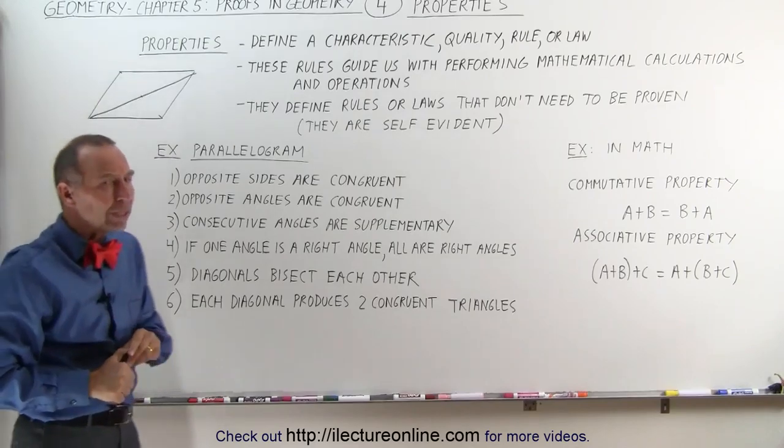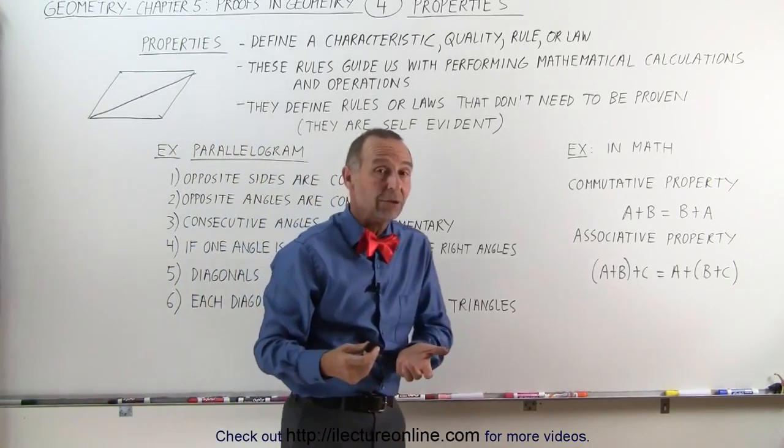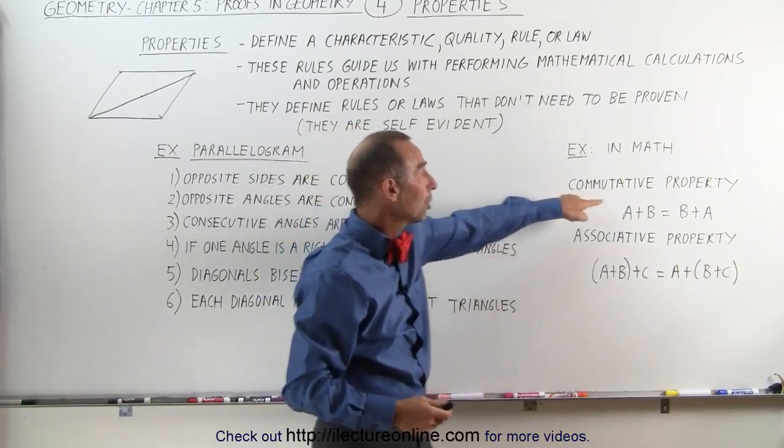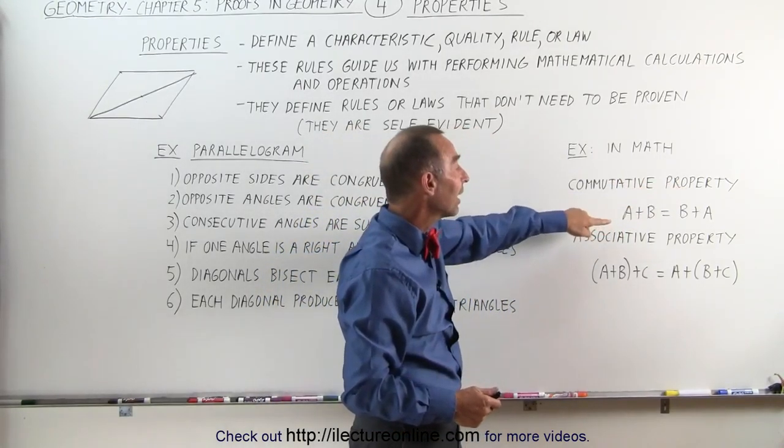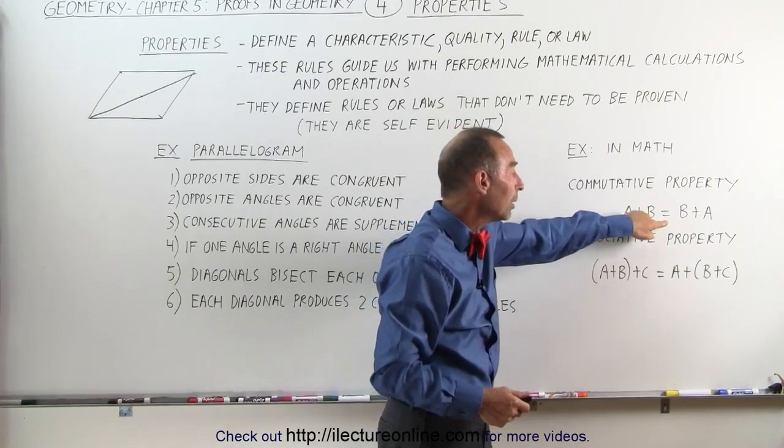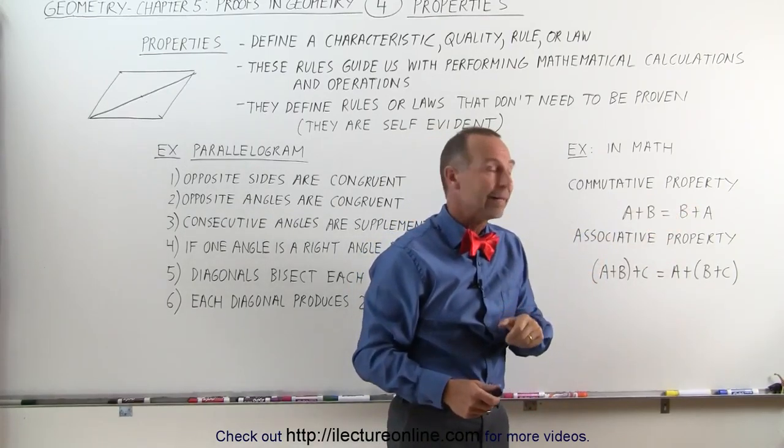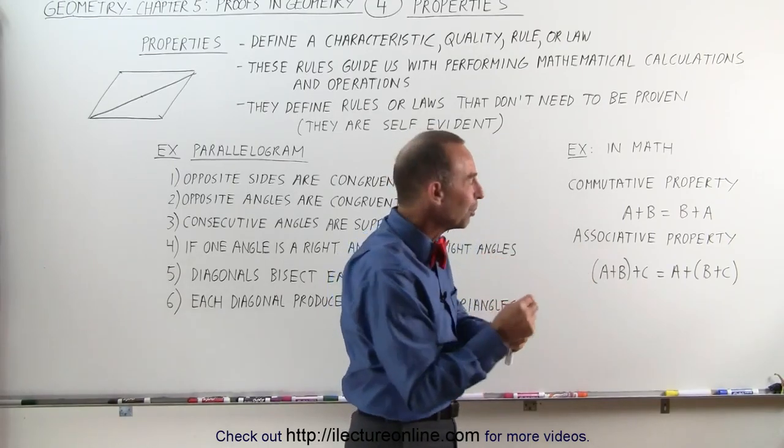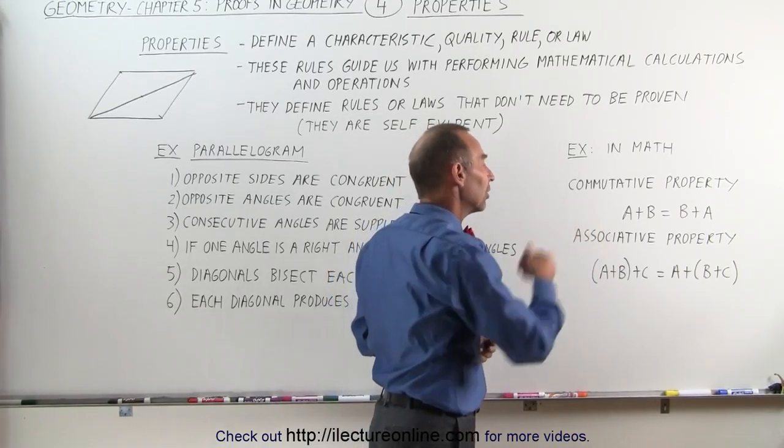When we deal with regular mathematics, we have some properties there as well that you're probably already aware of and familiar with. For example, the commutative property. We can say that A plus B equals B plus A. That's the commutative property of addition. You can switch them around. You can commute A and B, and they're still equal.